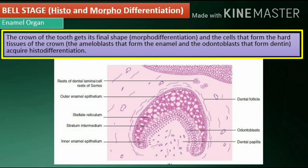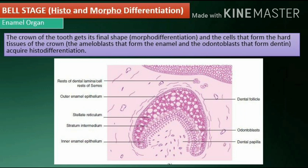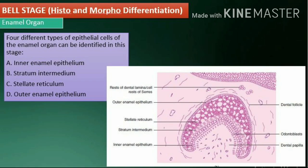Bell stage: The crown of the tooth gets its final shape through morphodifferentiation, and the cells that form the hard tissues of the crown — the ameloblasts that form enamel and the odontoblasts that form dentin — acquire histodifferentiation. Four different types of epithelial cells of the enamel organ can be identified in this stage: inner enamel epithelium, stratum intermedium, stellate reticulum, and outer enamel epithelium.